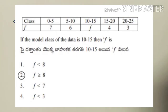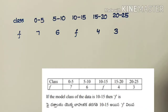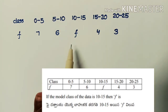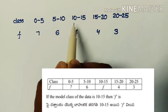In the first problem, a table is given with class intervals and frequency. The question is: if the modal class of the data is 10 to 15, then f is equal to — with options f less than 8, f greater than or equal to 8, f less than 7, and f less than 3.